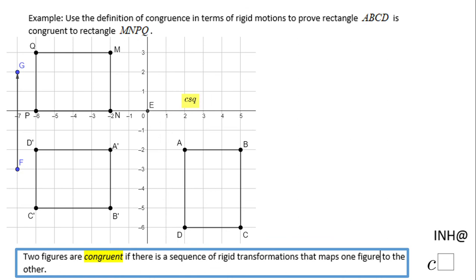You can see the same rotation and translation illustrated here. Note that this is one way to prove these two rectangles are congruent — there can be a different sequence of transformations that leads to the same result. If you enjoyed this, don't forget to click the like button and come back to C Squared for more help. Thank you!